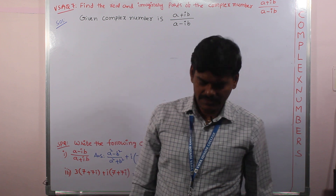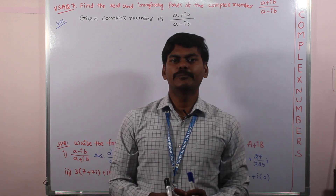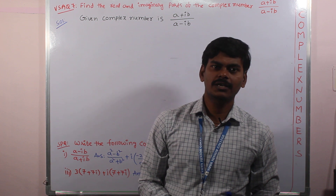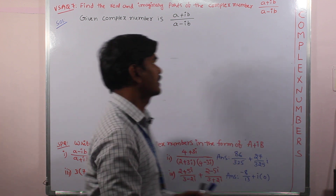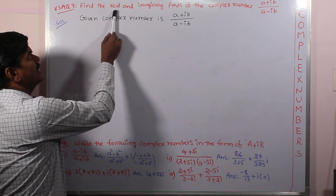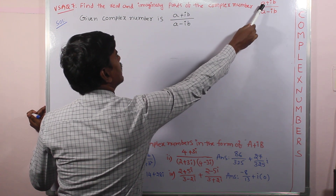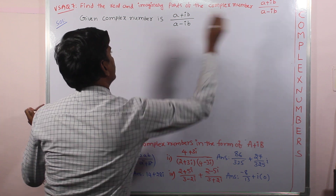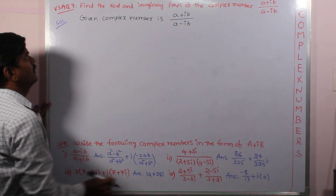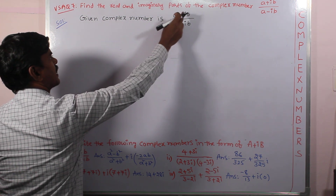Hello students. In this video we are going to learn one of the important very short answer questions from the chapter complex numbers. The question is: find the real and imaginary parts of the complex number (a + ib) / (a - ib). So let us first write the given complex number (a + ib) / (a - ib).